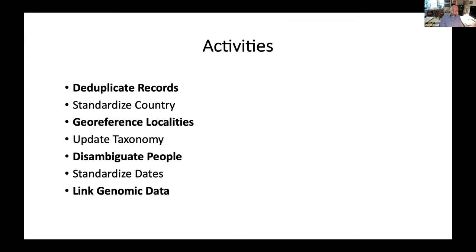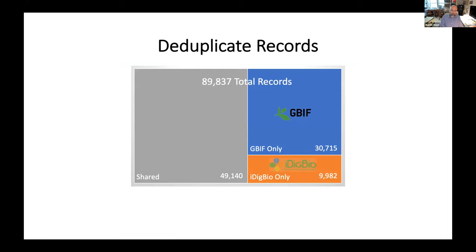We focused on enhancing the data in these ways, and I'll walk through those in bold with you. If you pay attention to the change in slide title, you can follow our relatively rapid progression through these activities. The specimen data coming from the two major aggregators has overlapped, but it's not identical — deduplicating their records produced about 90,000 in-scope records.